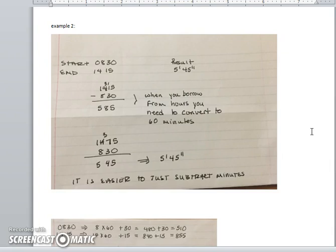Here is the second example. Starting at 8:30 a.m. again and then going to 14:15. In this case our end result should be 5 hours and 45 minutes so we can know what our result should end up to be.